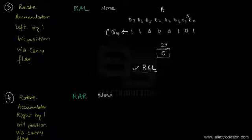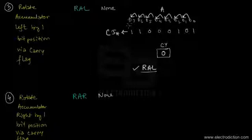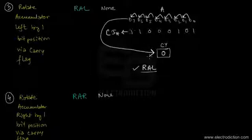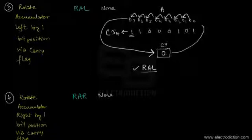D0 becomes D1, D1 becomes D2, D2 becomes D3, D3 becomes D4, and so on. But bit D7 does not go to bit D0. Instead, the bit at the D7 position goes to the carry flag, and the carry flag data is loaded into the D0 position.